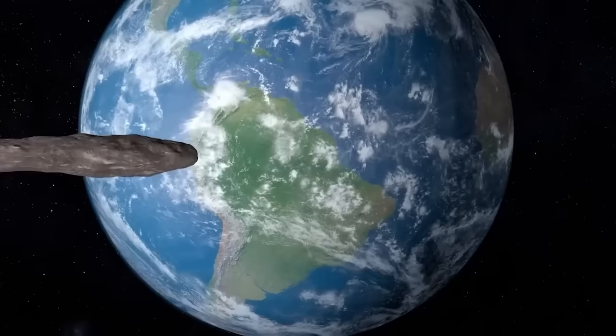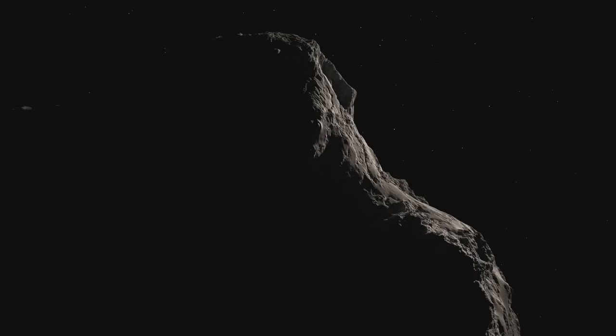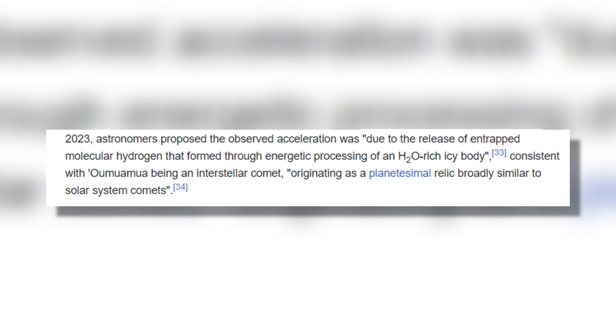Further adding to its enigma, the object exhibited a unique reddish tint. Such a color is often linked to objects in the outer stretches of our solar system, usually due to space dust. However, Oumuamua defied this norm. It showed no signs of dust and appeared composed mainly of metals and rock, lacking the common water ice or other components usually seen in space entities.